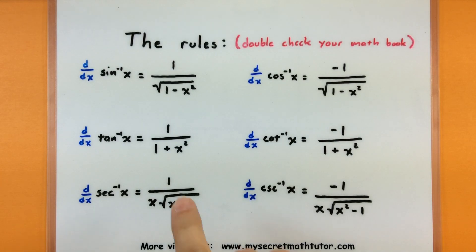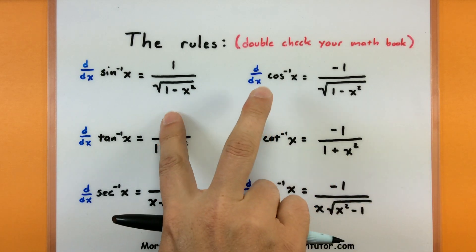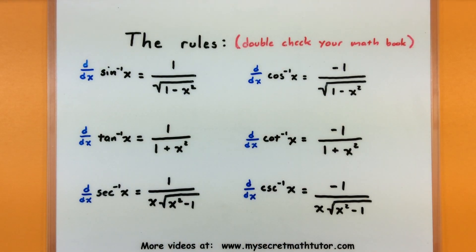And the good way you can connect these two is sine and its co-function, cosine, those are the ones that are the same, but cosine has the negative part. Here's tangent and its co-function, cotangent, it has the negative sign for inverse cotangent.